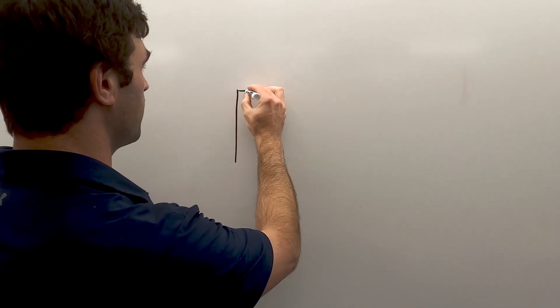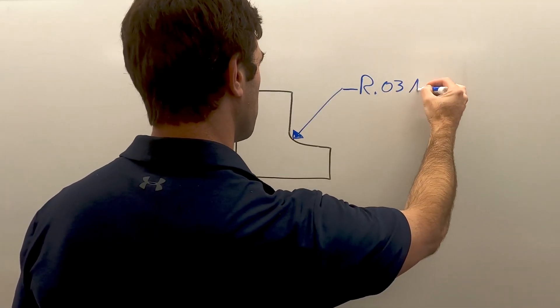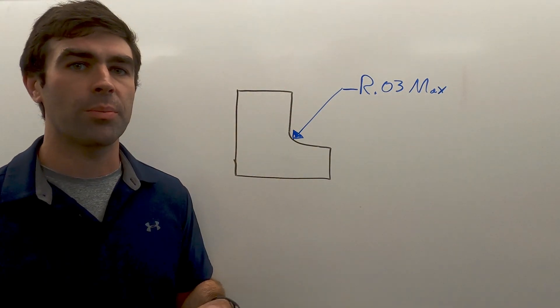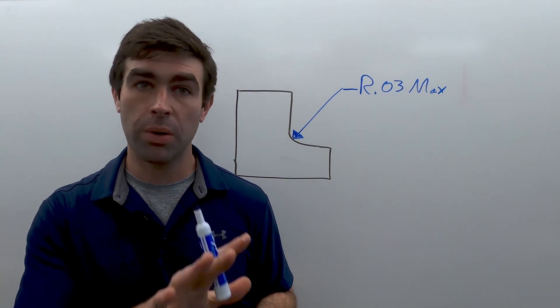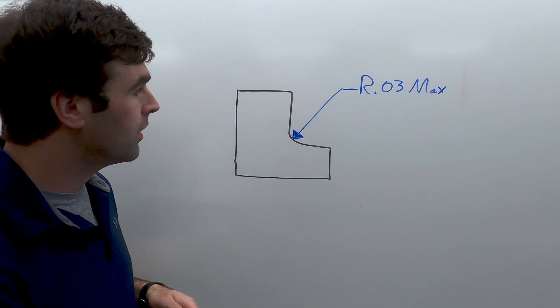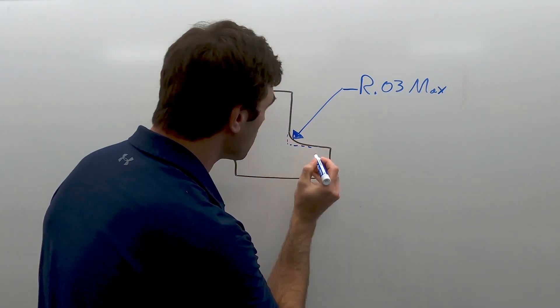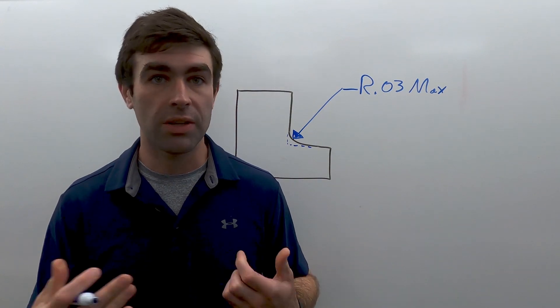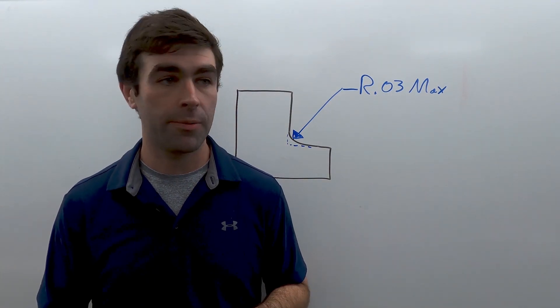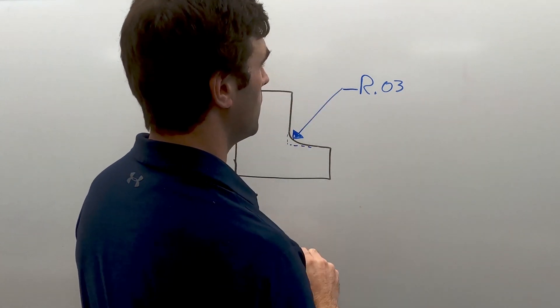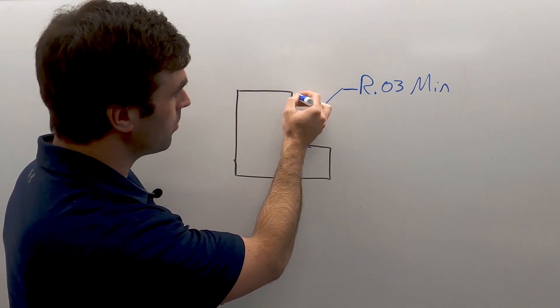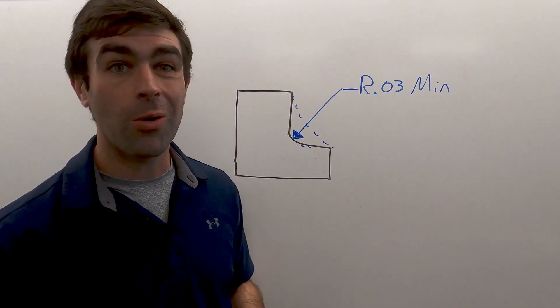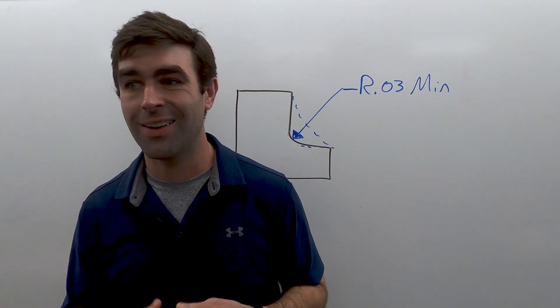So one example you've probably seen where this is very common is for something like a fillet. In this case, it's got a maximum radius, but on the other end, it can be zero. So a part that had no radius at all would be totally acceptable. If I put minimum, right? So it's either got to be here, but it could go all the way out there. It's a little bit more unclear.